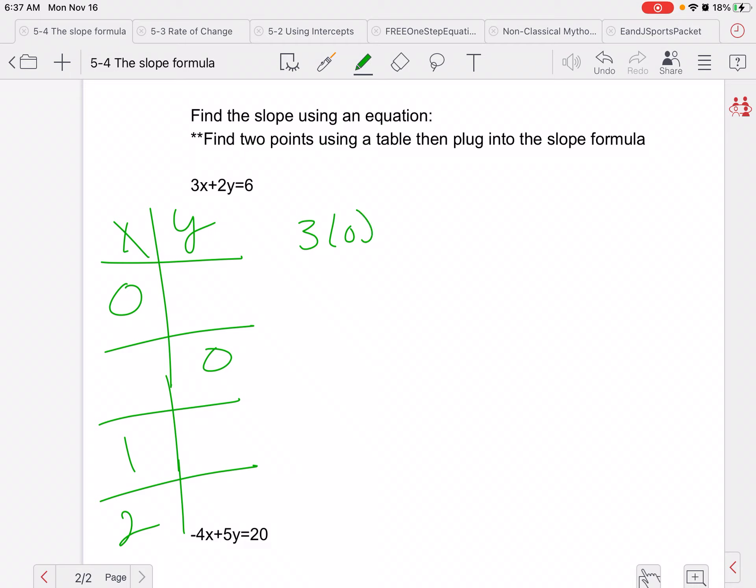So 3 times 0 plus 2y equals 6. So we have 2y equals 6. So y is going to equal 3. So that's one of my points. And then if I do 3x plus 2 times 0 equals 6, we'll divide by 3 because this just disappears. x equals 2. So again, I will have my two points here. So now I found my two points. Now I will find this slope.